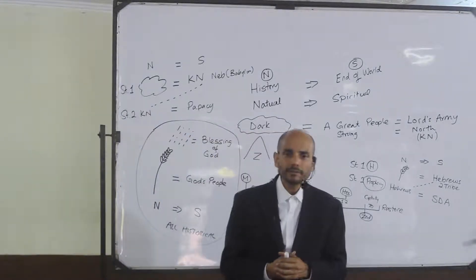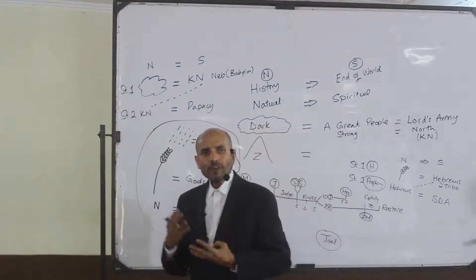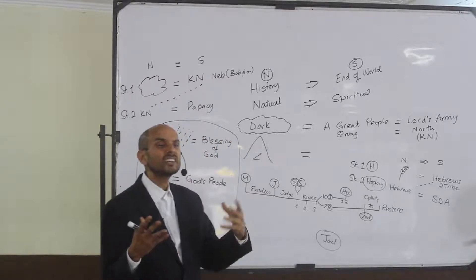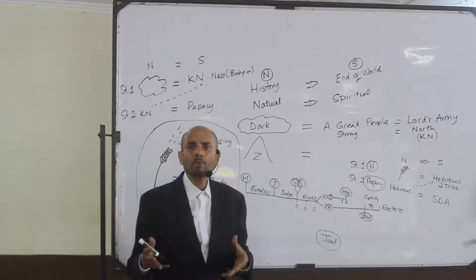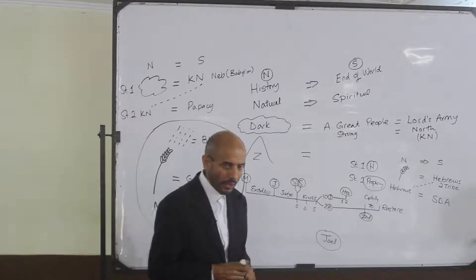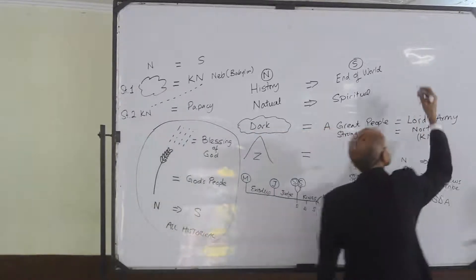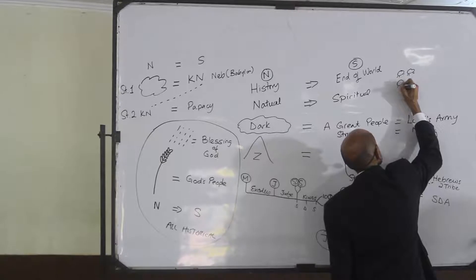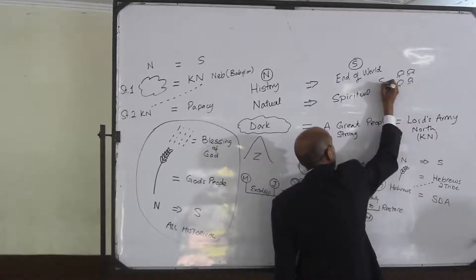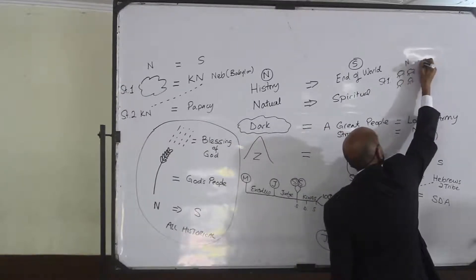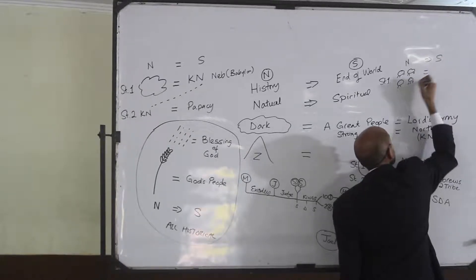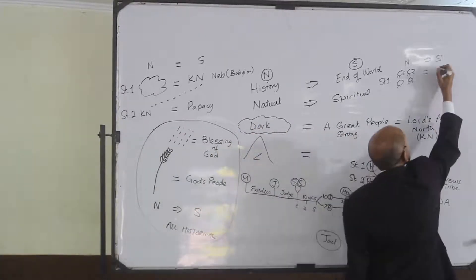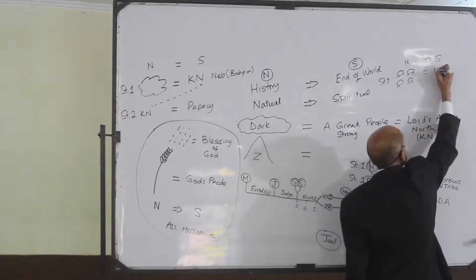One more piece of information: the book mentions four insects. I want to make a suggestion here. What I have proven is that these four insects — step one, natural to spiritual — equal the army. We've proven this. So I'll just put 'the king of the north.' Then what we'd do is bring it down to step two: king of the north.